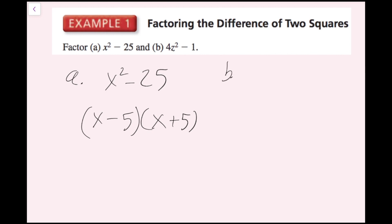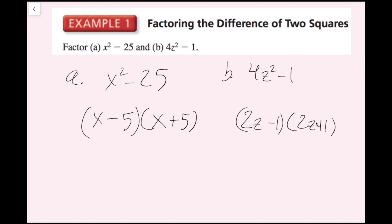For part b, I have 4z squared minus 1. This is also a difference of squares. If I take 4z squared to the one-half power, I get 2z. And 1 is also a perfect square. So you can think of this as 2z minus 1 times 2z plus 1. It doesn't matter which factor you write first. This is the factored version of 4z squared minus 1. Now we're done with example 1.